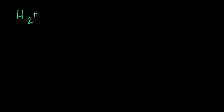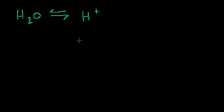We know that if we leave water to its own devices, so you have some H2O, it's in equilibrium with the auto-ionized version of itself. A little bit of it will turn into some hydrogen ions, and we know that this really takes the form of hydronium — these attach themselves to other water molecules — but we'll write it as a hydrogen ion, which is really just a free-floating proton, plus some hydroxide ion.